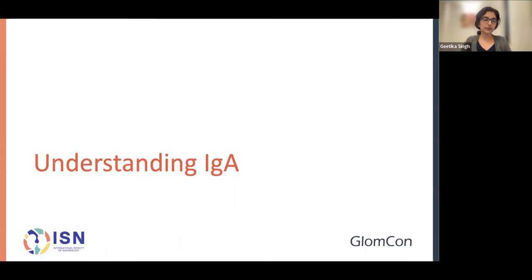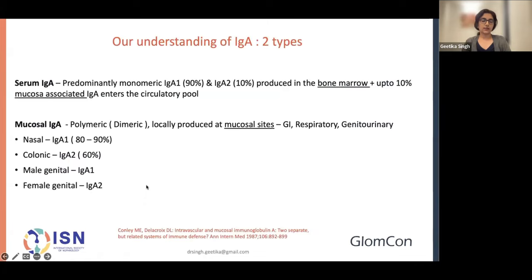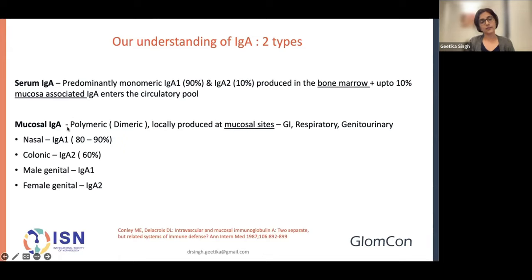Before going on to what we did, it's important to understand IgA. There are two types: serum IgA in circulation, which is predominantly monomeric IgA1 at 90%, with a little IgA2 subclass — this monomeric IgA1 is produced in the bone marrow and in circulation. Along with that, you have up to 10% mucosal-associated IgA entering the circulatory pool. Mucosal IgA is polymeric, specifically dimeric, locally produced at mucosal sites — GI, respiratory, and genitourinary — and could be either IgA1 or IgA2 subclass depending on the site of production.